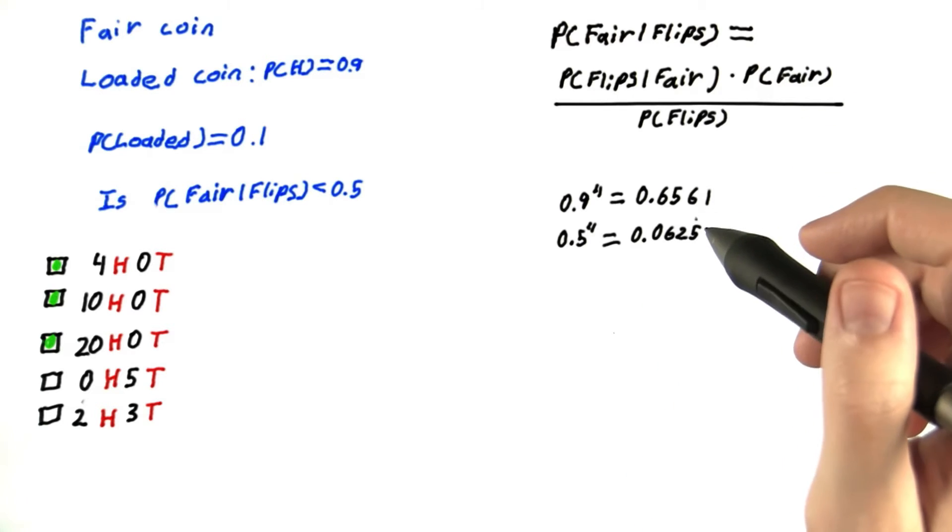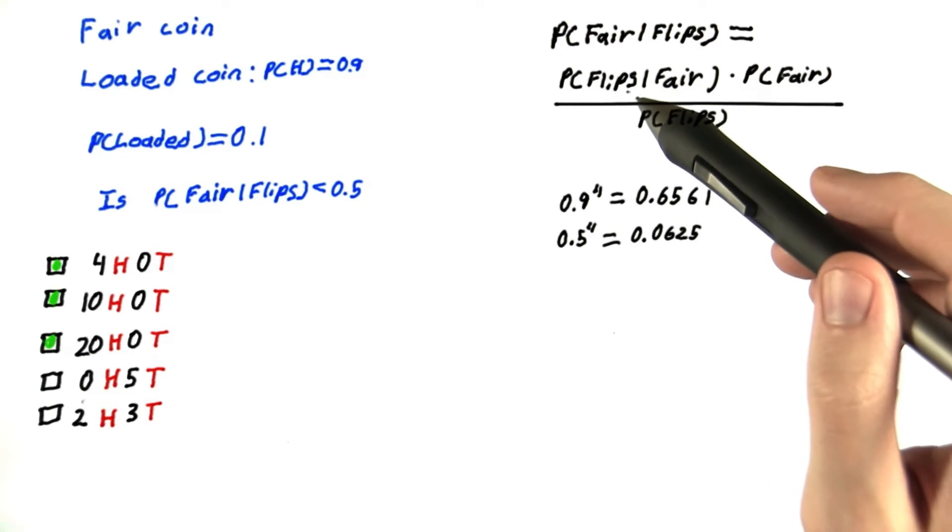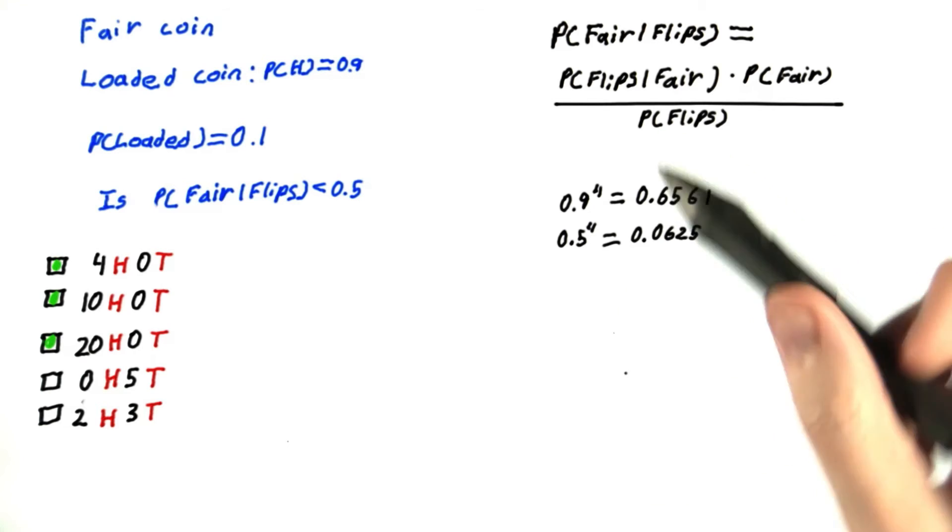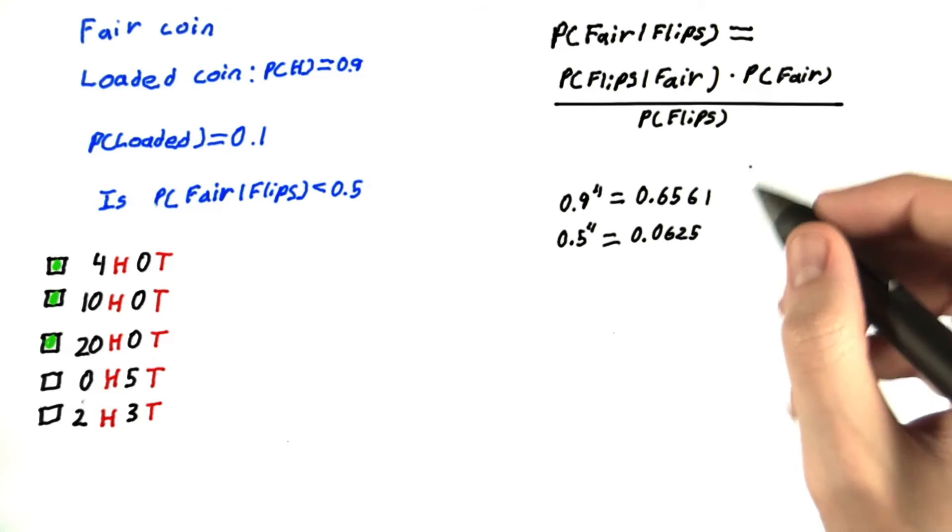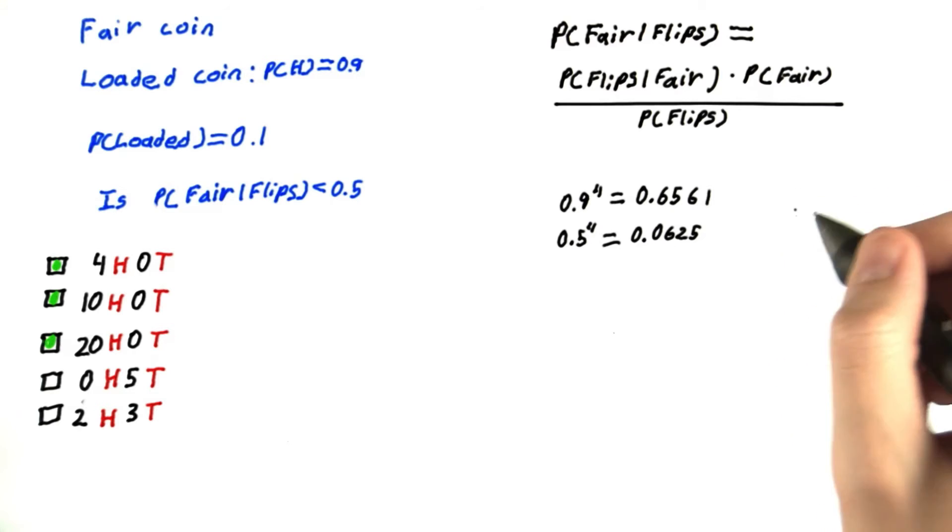But remember, this just gives us the probability of flips given fair and given loaded. We have to multiply each of these by the probability of fair and the probability of loaded.